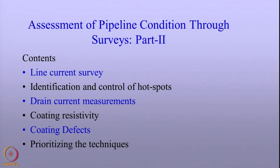In the last lecture, the two important techniques we discussed were soil resistivity and pipe-to-soil potential. In this talk, we will look at the following: line current survey, how to identify hotspots in pipelines, drain current measurements, coating resistivity, coating defects, and finally how to prioritize these techniques.